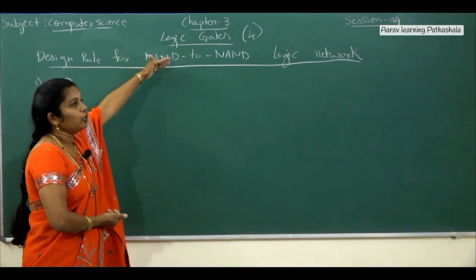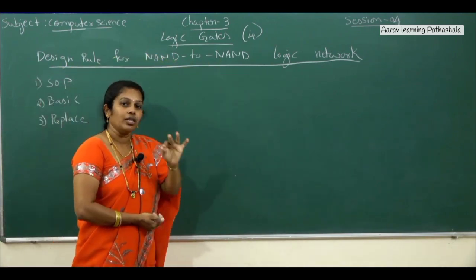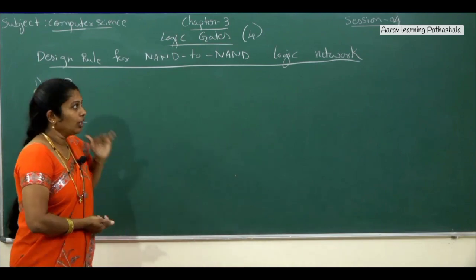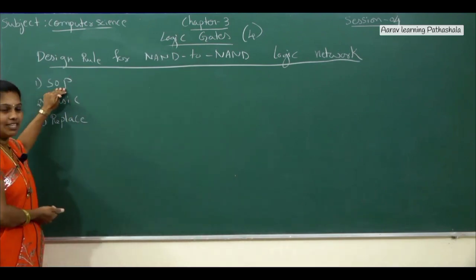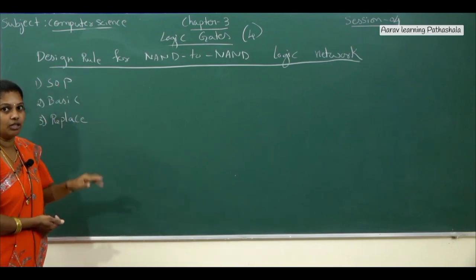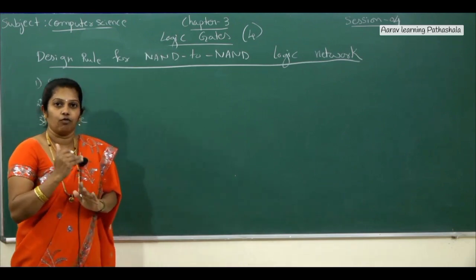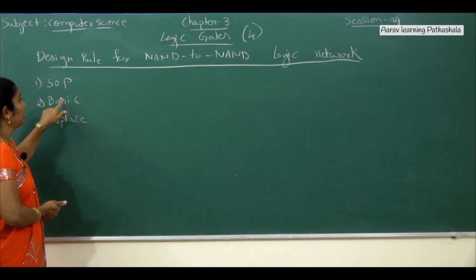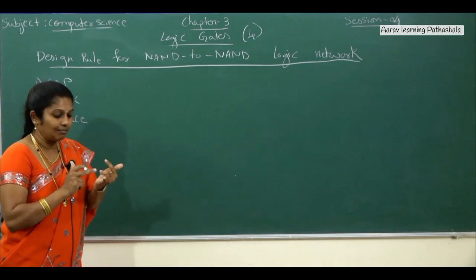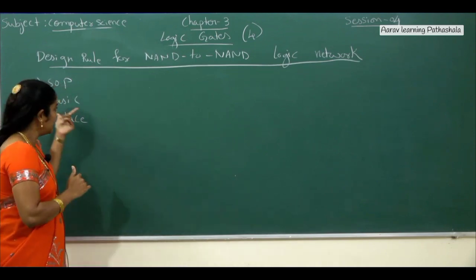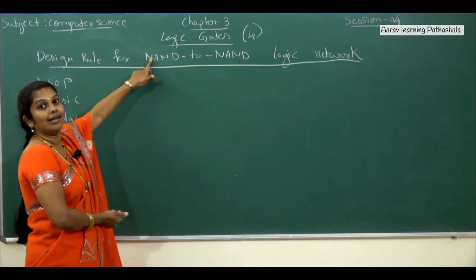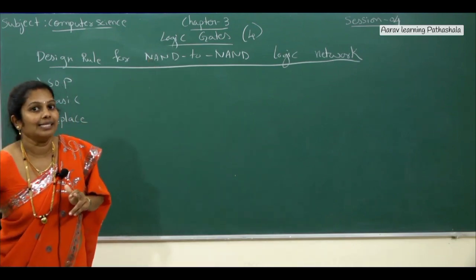For the design rule for NAND-to-NAND, compulsory you have to use only NAND symbols. There are rules to follow. The first rule is: check whether the given expression is in the format of sum of product form. If the question is not given in sum of product form, convert it to sum of product form. Then write down the same expression using basic circuits — AND, OR, NOT — and draw the circuit diagram. Finally, replace all the basic gates with NAND symbols only.